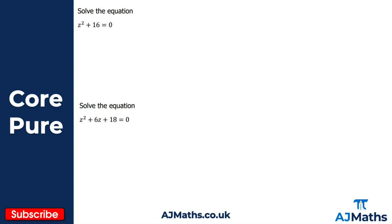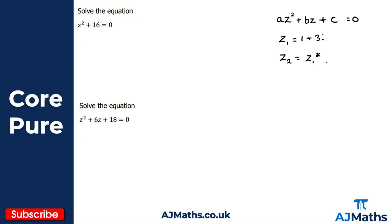If I have a general quadratic equation with complex solutions — so az² + bz + c = 0 — and one of my solutions is z₁ = 1 + 3i, then my second solution z₂ will be the conjugate of z₁. So the complex solutions to a quadratic occur in a conjugate pair. We have covered the complex conjugate already; if you aren't familiar with it, check out the previous video. In this case z₂ = 1 − 3i.